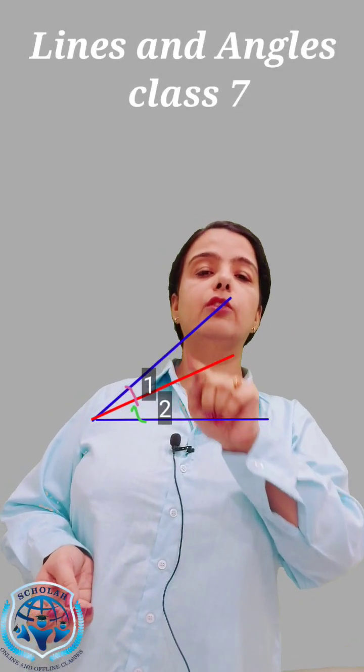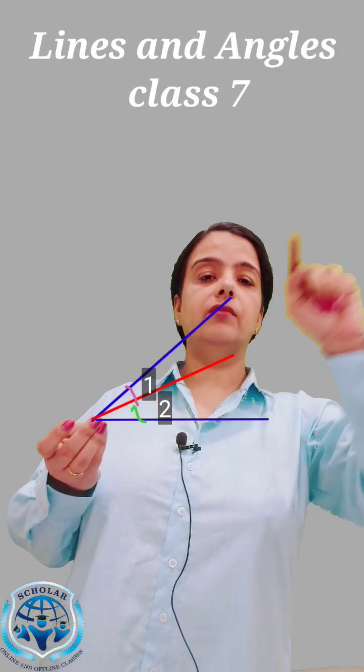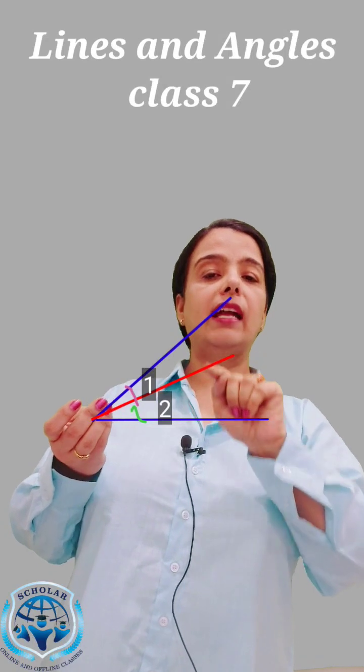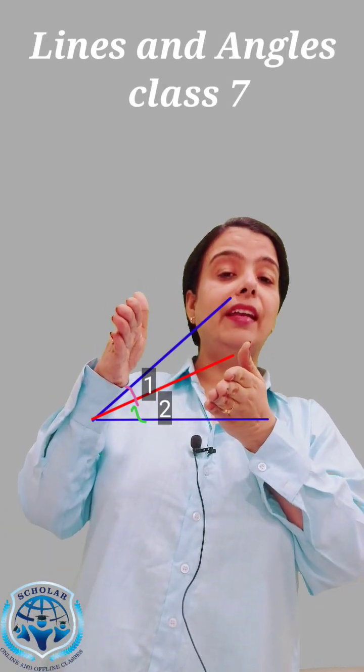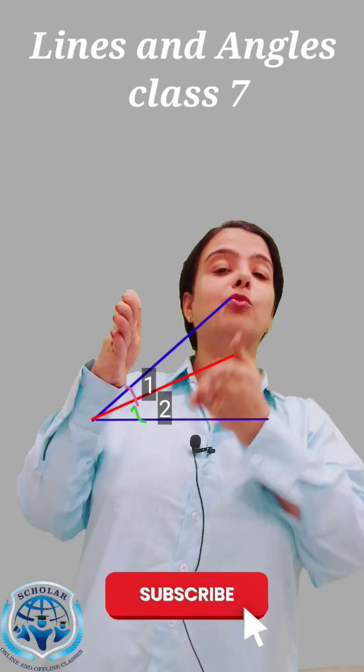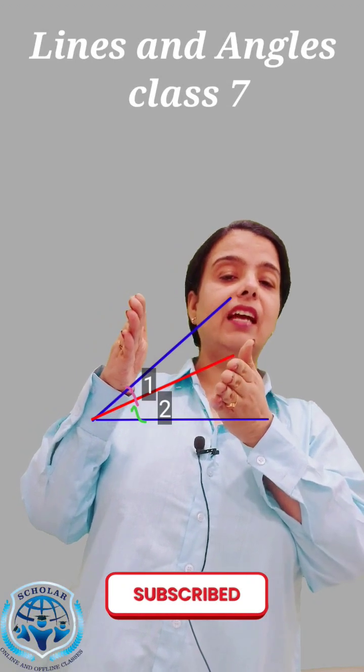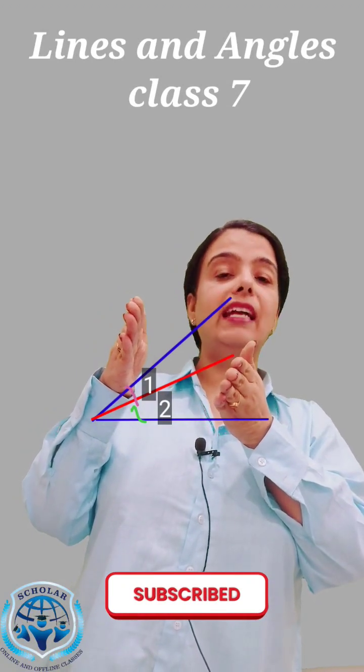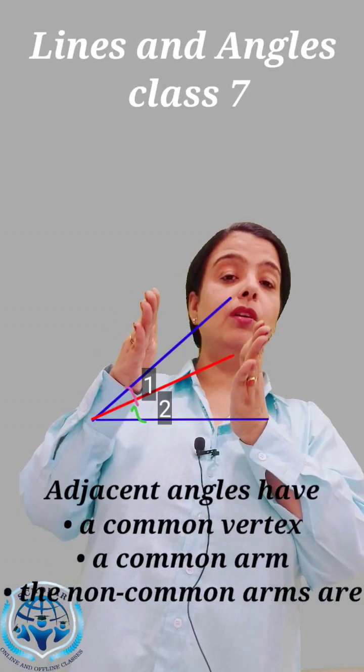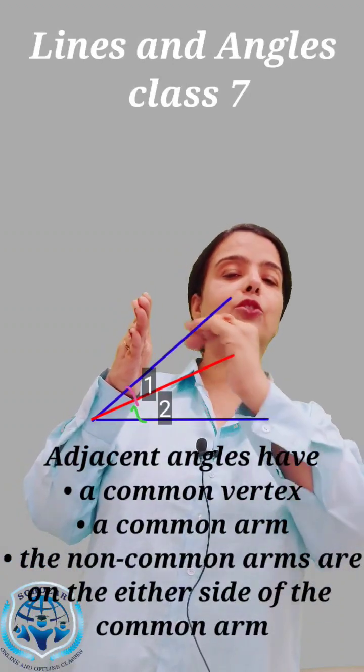Consider these two angles. This is one line and these are two angles. These two angles are neighbors, they are next to each other. These types of angles are called adjacent angles because they are placed next to each other.